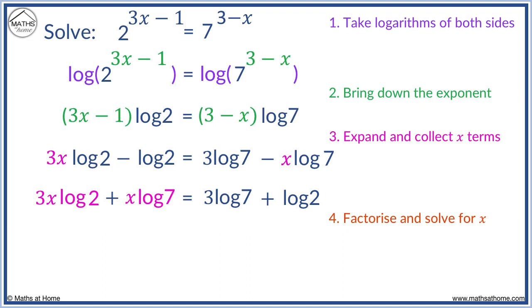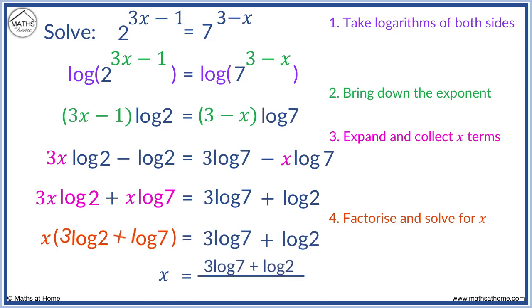Now we factorise and solve. We take x out and inside the brackets we have 3 log 2 plus log 7. We keep the right the same. To solve we divide 3 log 7 plus log 2 by the brackets next to the x. On a calculator this equals 1.62.